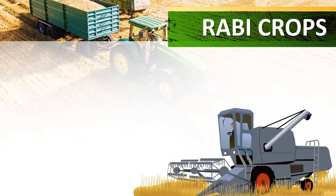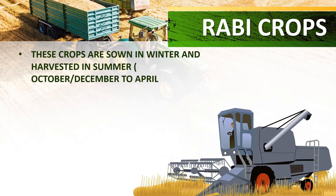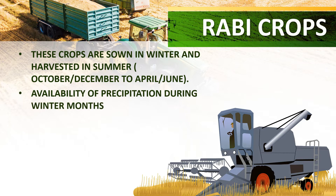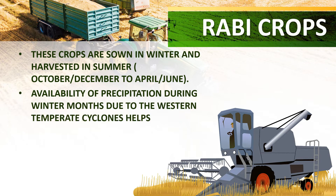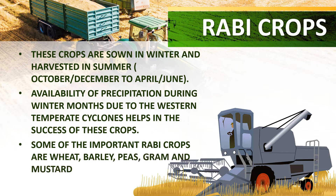Rabi crops are sown in winter and harvested in summer — that is, sown in October to December and harvested in April to June. Availability of precipitation during winter months due to western temperate cyclones helps in the success of these crops. Some of the important Rabi crops are wheat, barley, peas, gram and mustard.